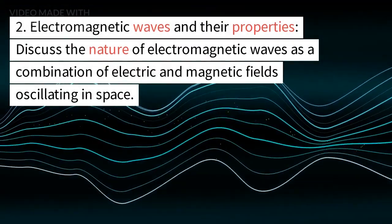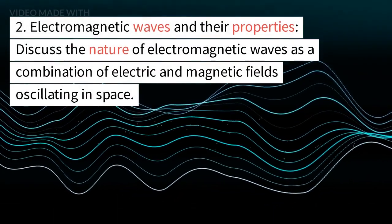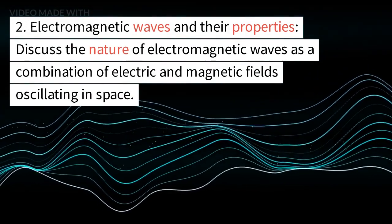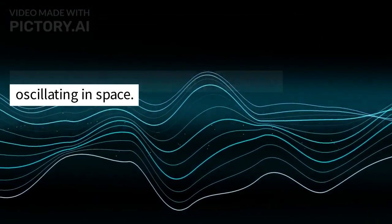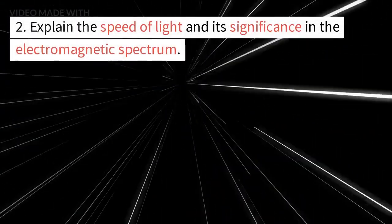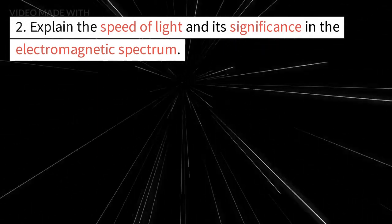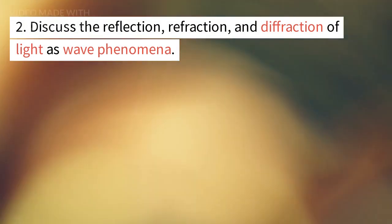Electromagnetic Waves and Their Properties. Discuss the nature of electromagnetic waves as a combination of electric and magnetic fields oscillating in space. Explain the speed of light and its significance in the electromagnetic spectrum. Discuss the reflection, refraction, and diffraction of light as wave phenomena.